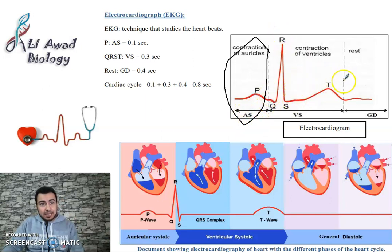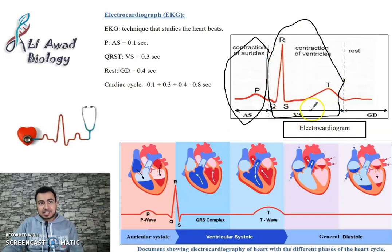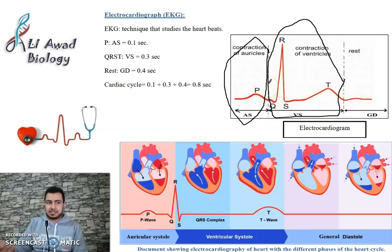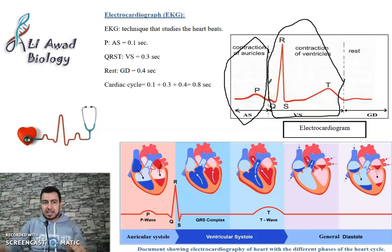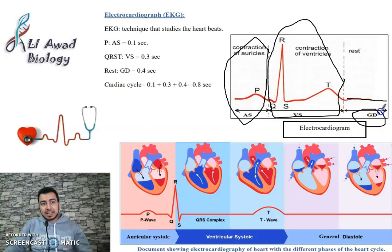QRST — this entire period — is the ventricular systole (VS), where the two ventricles contract to push blood toward the arteries. Then the descending flat region after T is the general diastole — at rest.